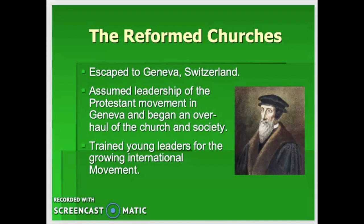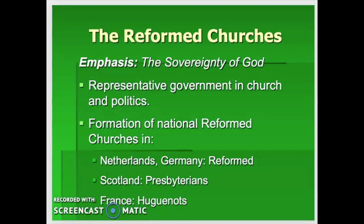In Geneva, Calvin trained young leaders for the growing international Reformed Church movement and sent young men out all over Europe to form new churches. These churches were started in the Netherlands as the Dutch Reformed Church, which came to America with Dutch settlers and is known in the US as the Christian Reformed Church. In Germany it's the German Reformed Church, in South Africa the Dutch Reformed Church, in Scotland it was called Presbyterian — the same movement. In France it was the French Reformed Church, and followers were known as Huguenots, who may have made up about one-fifth of France's population.